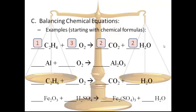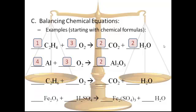The next one is a little tricky. Start with aluminum, since that seems least tricky. On the left, one aluminum; on the right, two. Double the left — now they agree. Now the O's, always tricky: on the left, two O's; on the right, three. To get them to agree, find a common multiple of six. Triple the O2 on the left, and double the Al2O3 on the right. But that changes aluminums on the right from two to four, so switch to four on the left too. Final check: four Al's on both sides, six O's on both sides.